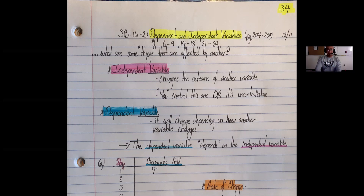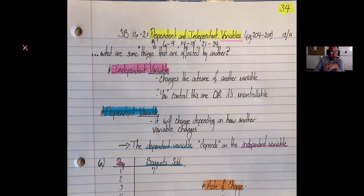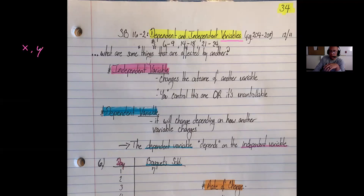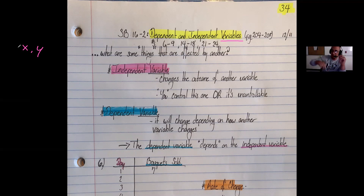Before we begin, let us talk about the word variable. We are talking about dependent and independent variables. If you were to say a variable can be like a letter or a symbol that stands for a number, you would be correct. It's a letter or symbol that we put in whenever we don't know a number or whenever a number can change depending on the situation.